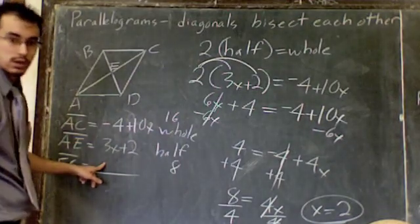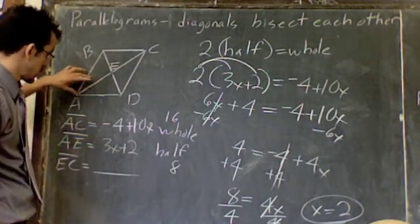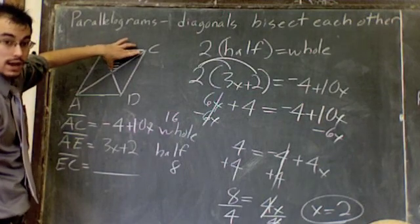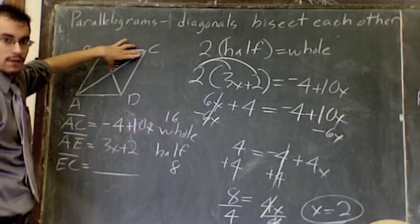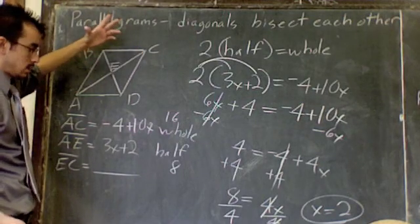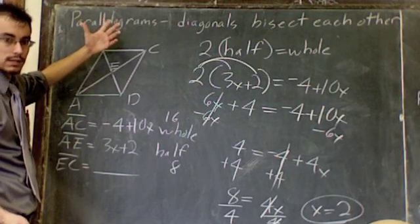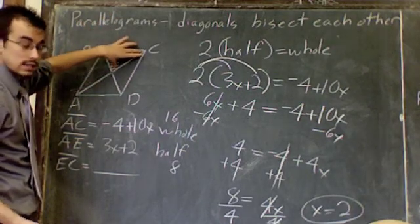What about this last question though. EC. Let's see. AE was half. EC is the other half. Well, if they're half and half, halves are equal to each other. Otherwise they wouldn't both be half. It wouldn't make sense. So if this is 8, EC is 8.